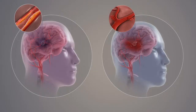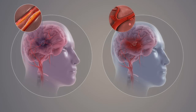Here we have the two types of stroke: on the left an ischemic stroke, and on the right a hemorrhagic stroke. An ischemic stroke is due to an occlusion in a blood vessel and this will lead to neuronal cell death and consequent liquefactive necrosis in the brain. A hemorrhagic stroke is due to a ruptured blood vessel that will start bleeding into the cranial cavity, exerting a lot of pressure on the brain cells causing them to die.